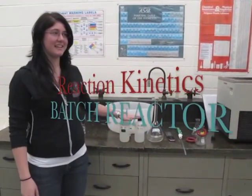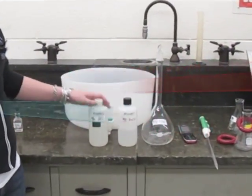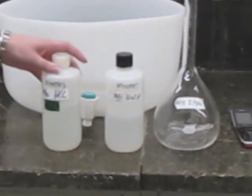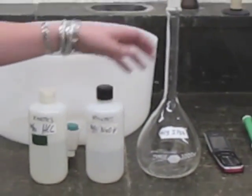The first reactor we use in the kinetics experiment is the batch reactor. The reagents we use are hydrochloric acid, sodium hydroxide, and isopropyl acetate.